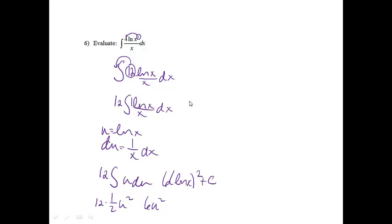And since u is ln x, it will be 6 quantity ln x squared plus c. Now I'm going to try to show you if you would have worked it a different way, what that would have happened. Let's say you bumped the 4 out front, but that's all you saw. So let's say you let u equal the natural log of x cubed.